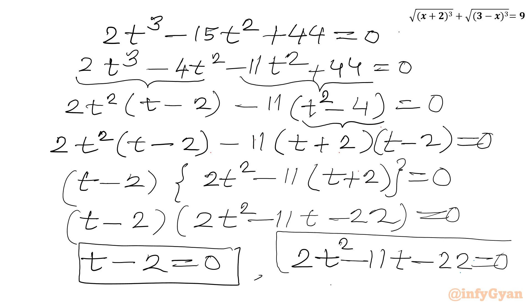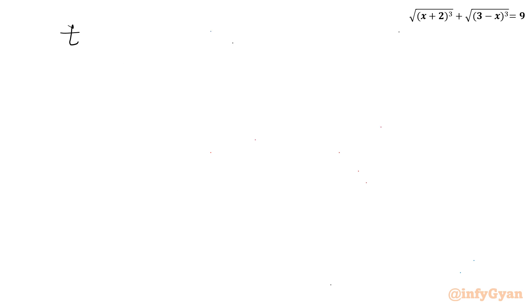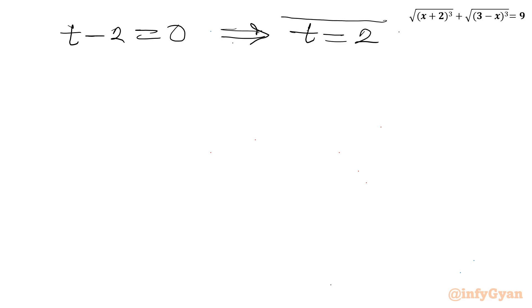Let us solve one by one. From the first factor, if t − 2 = 0, then t = 2. So t = 2 is one confirmed real solution.